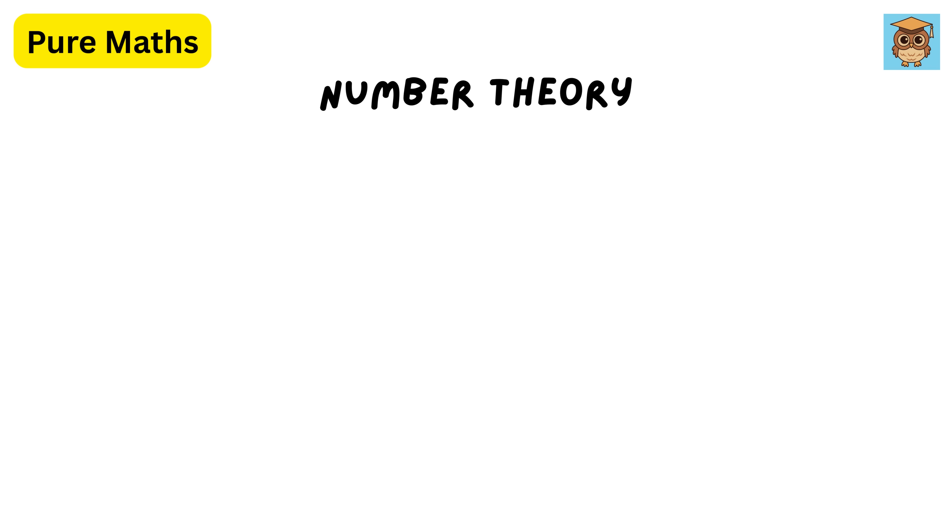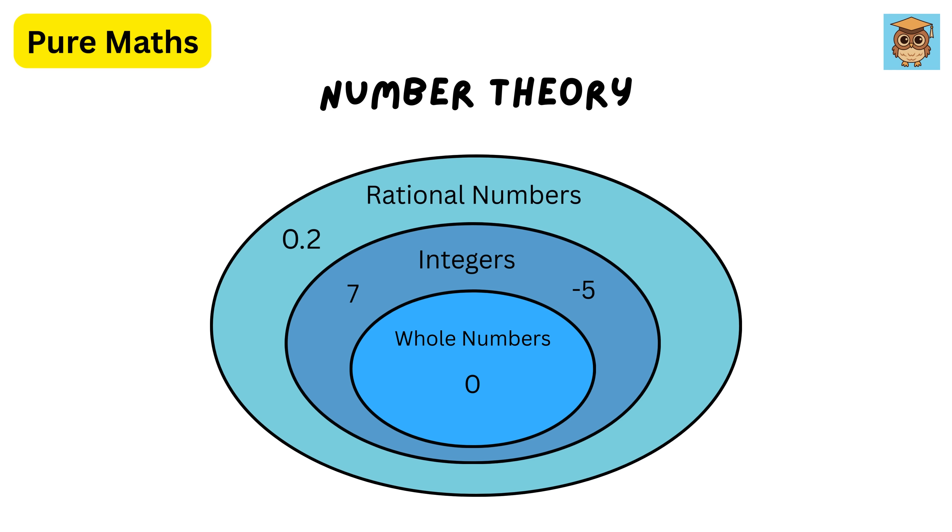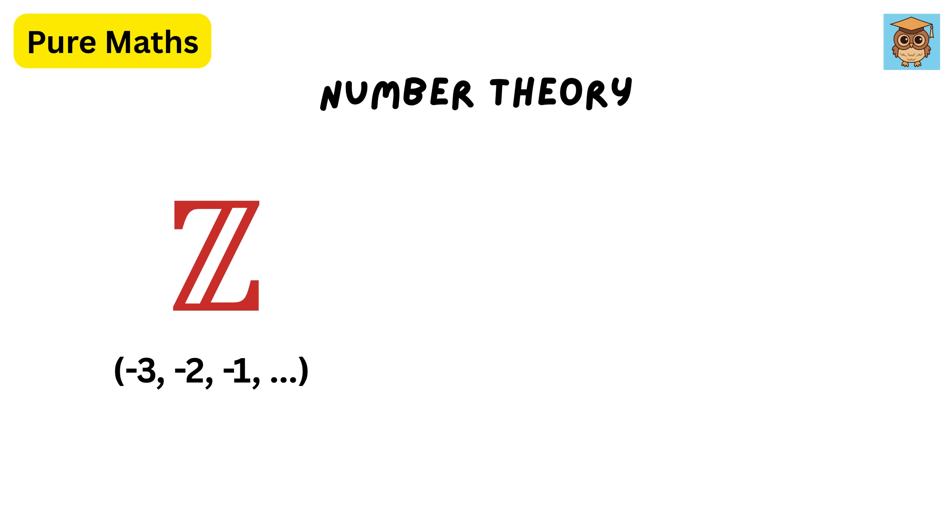Then we have number theory. Number theory is a branch of mathematics all about the properties and relationships of numbers, especially integers, and more specifically, prime numbers, which are numbers that are greater than one and have exactly two factors—one and the number itself.